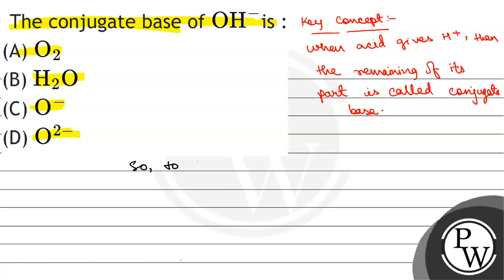To find the conjugate base of OH⁻, we have to remove H⁺.